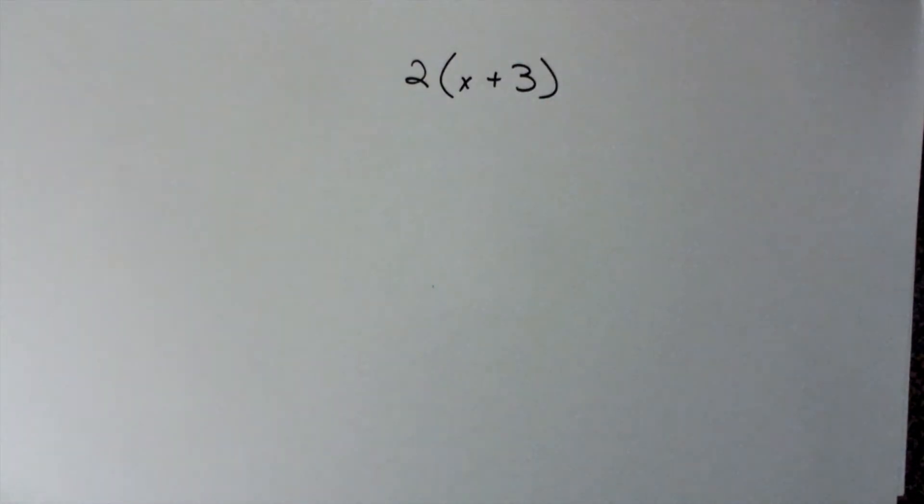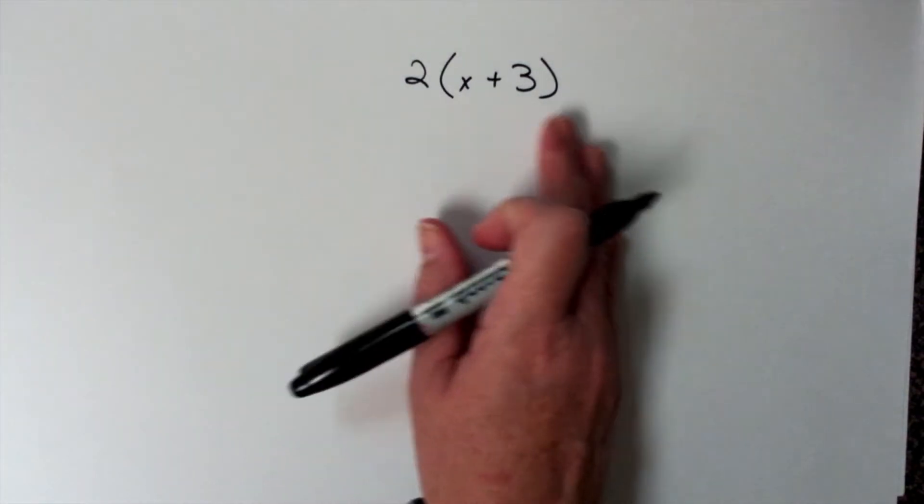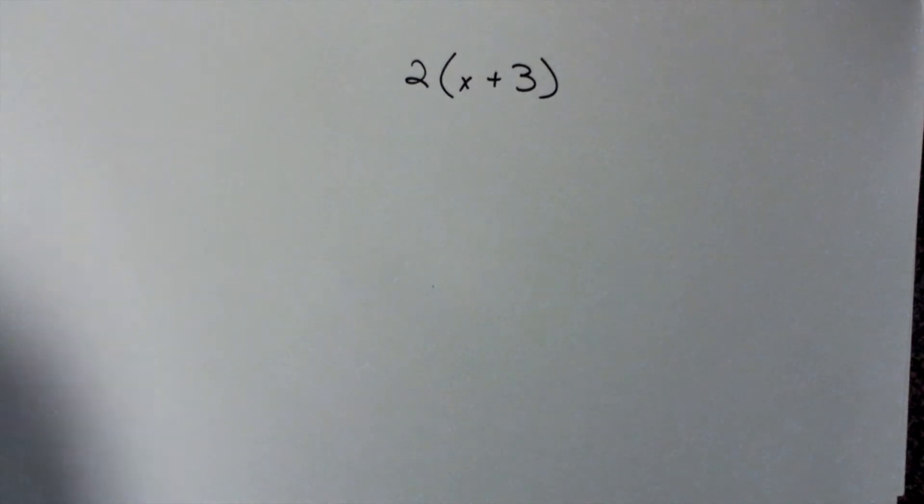So here's one. I've got, this says, two groups of x plus 3. So in this case, I've got two groups of x plus 3.